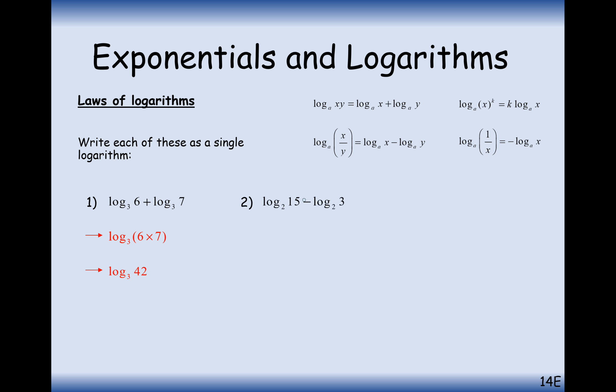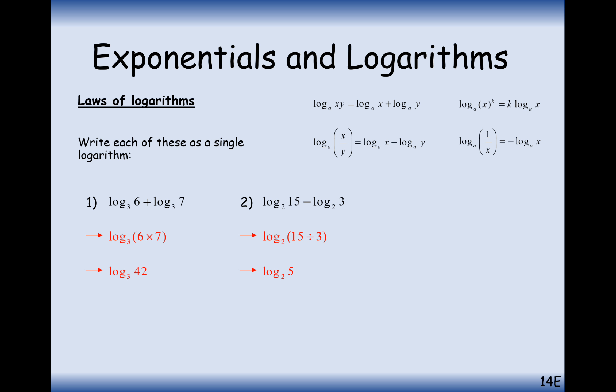For question 2, if you've got a negative, remember you subtract or divide your two logs together. So it's 15 divided by 3, which gives log base 2 of 5.